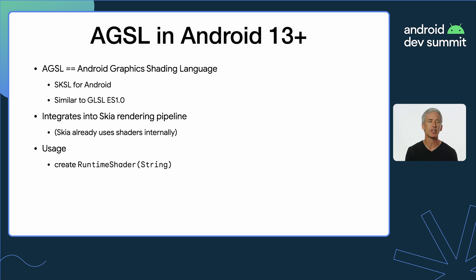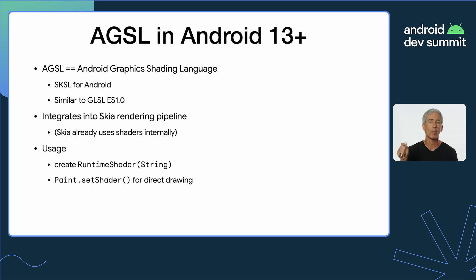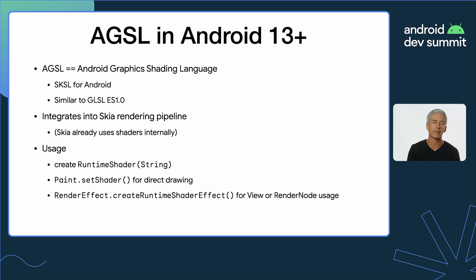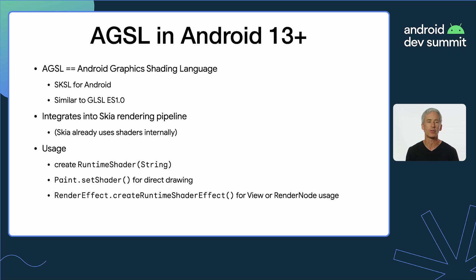The way you use AGSL is to create a RuntimeShader — you pass in a string which is the code you want it to use. It will compile that string and cache it in the system. Then you set the shader on a paint object if you're going to draw manually, like drawing a line with a shader. Or if you want to apply it to an entire view, that's what render effect is for — you can create a render effect that uses a shader as input and then apply that to a view or a render node, and it will apply to all operations that happen on that view or render node.